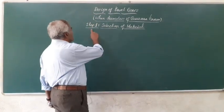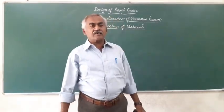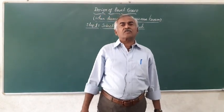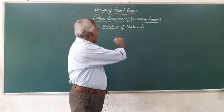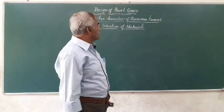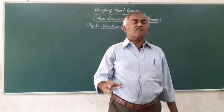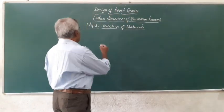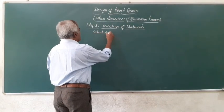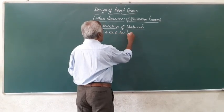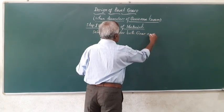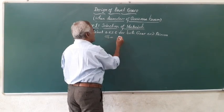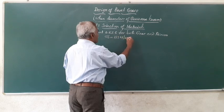As usual, in the first step I am going to select the material. In all the machine design data handbooks, you will have a list of materials generally used for bevel gears along with the allowable static stress sigma naught. In today's problem, I am going to select 0.2% carbon steel heat treated for both gear and pinion.